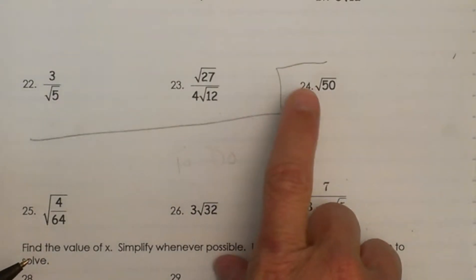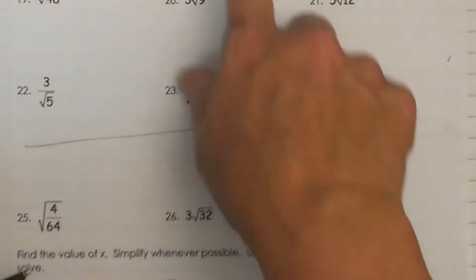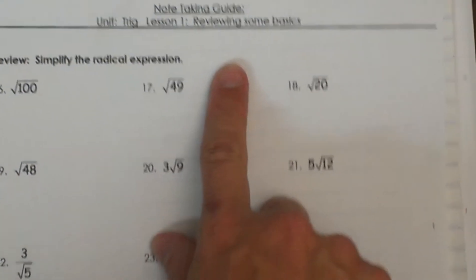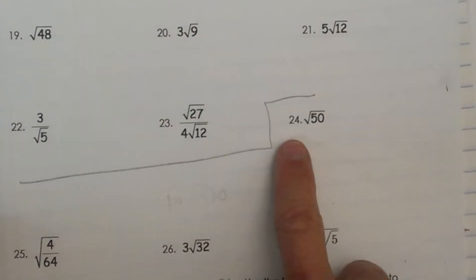We are going to finish reviewing, so we are starting at number 4, reviewing some basics in trig. We are on the back side of this worksheet working on simplifying square roots.